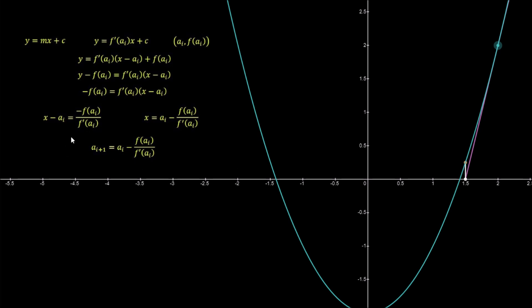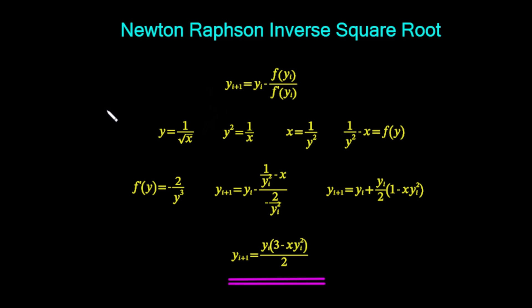This is the general form of Newton-Raphson. We need to adapt it because we are interested in finding the inverse square root. The inverse square root is y equals 1 over the square root of x, which transposes to y squared equals 1 over x, or x equals 1 over y squared. Taking x to the other side gives 1 over y squared minus x equals zero, and we set f(y) equal to this expression.